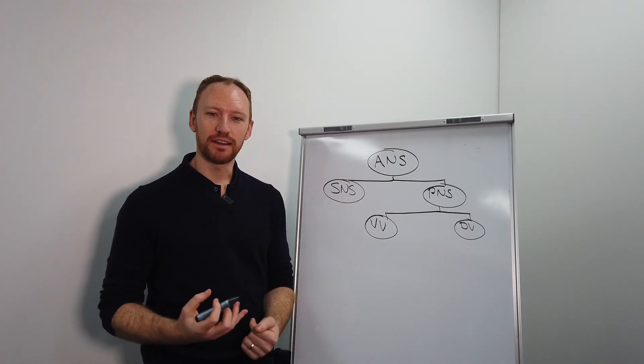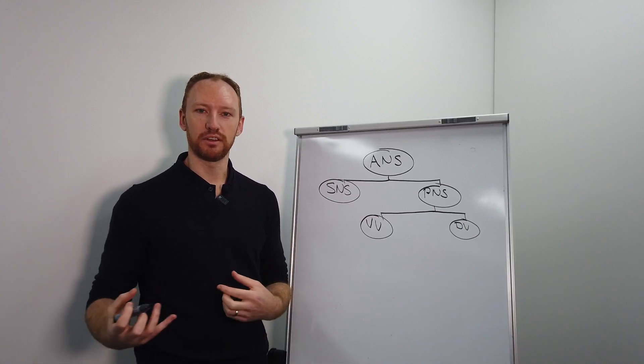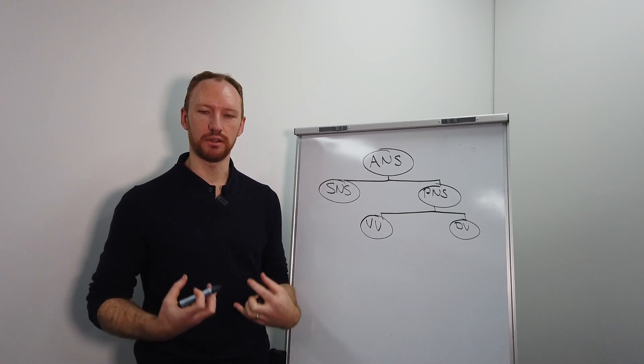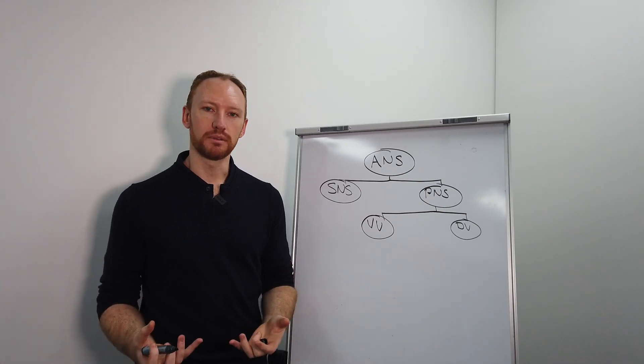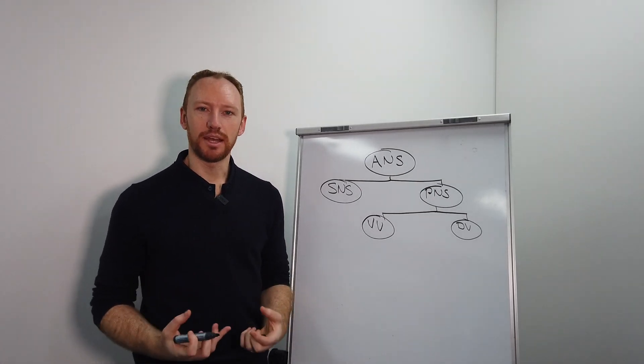The ventral vagus nerve is known now as our safe and social part of the nervous system. That enables us to feel calm, feel at home in our bodies, feel connected to others, feel connected and engaged to our environment as well. So that is what we like to be active most of the time.